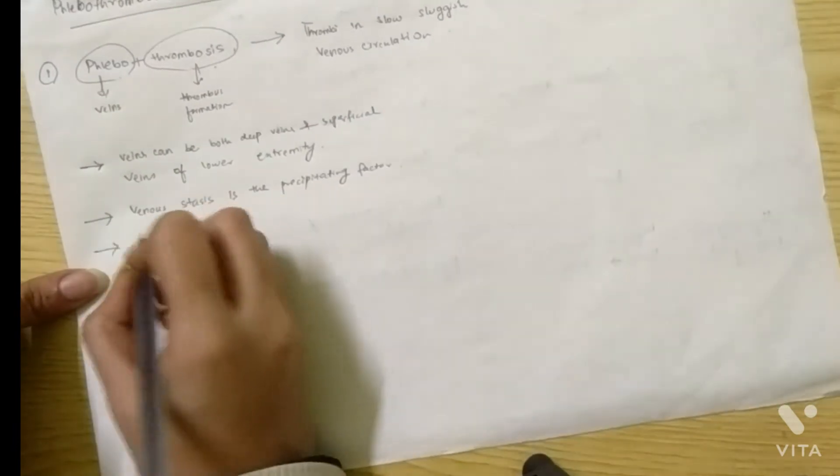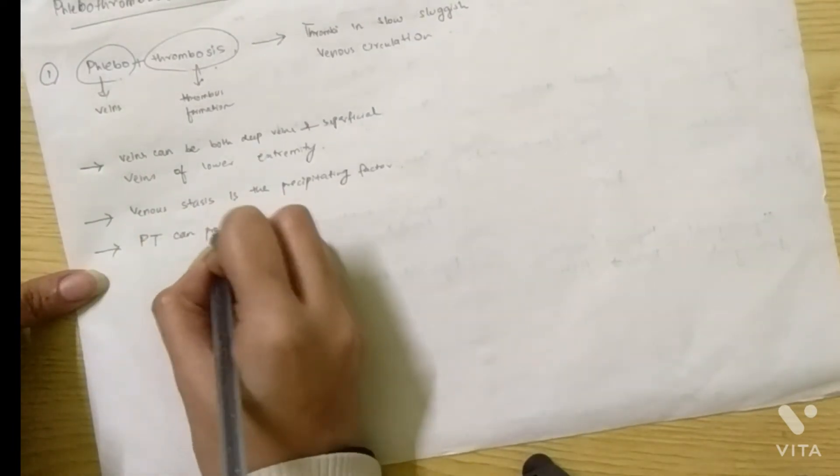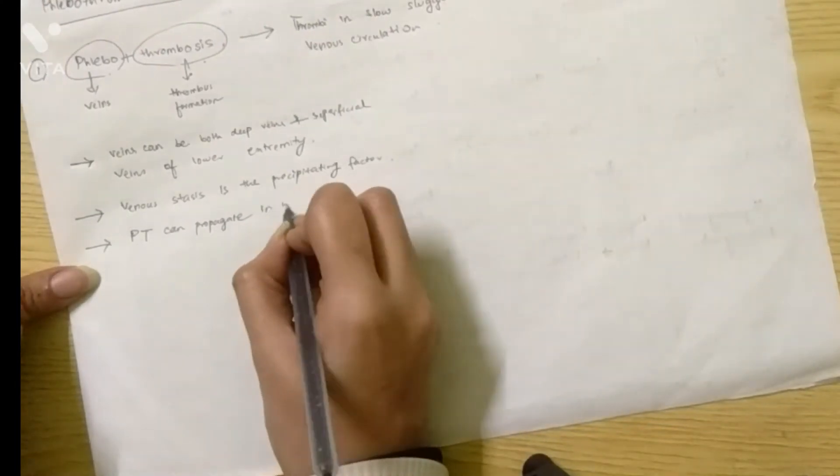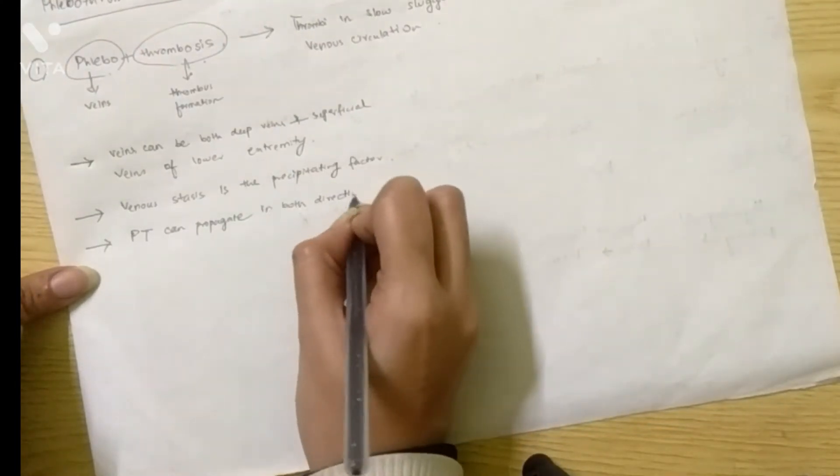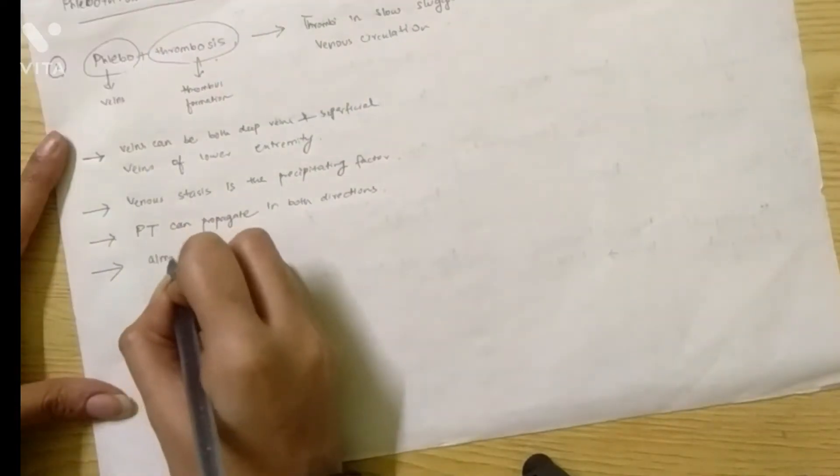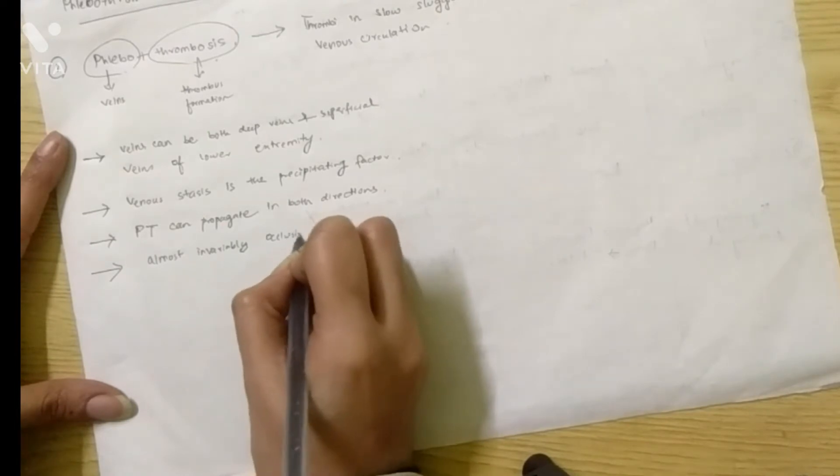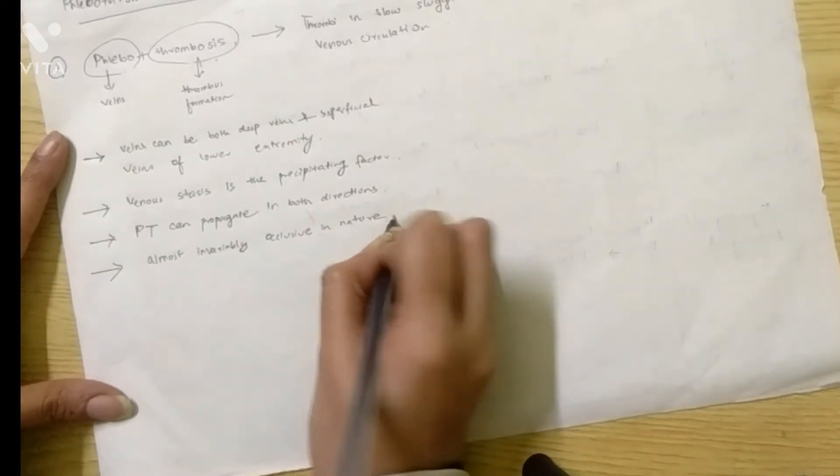Third point: phlebothrombosis can propagate in both directions. It does not stay in one place, it can propagate in both directions. And the fourth point about phlebothrombosis is that it is almost invariably occlusive in nature, meaning if it is formed in the veins then it will cause occlusion.